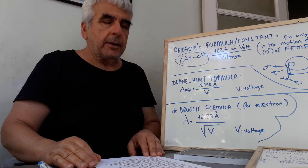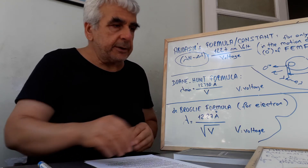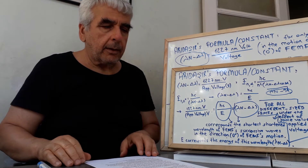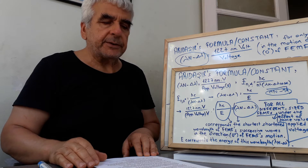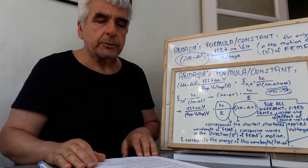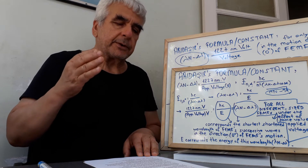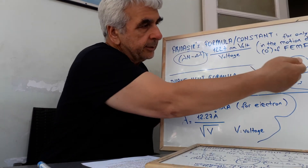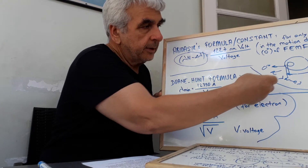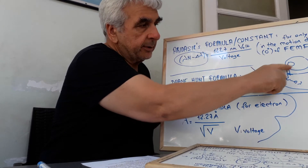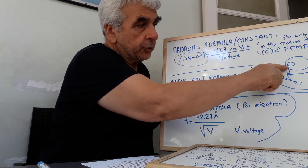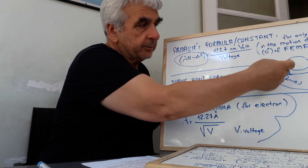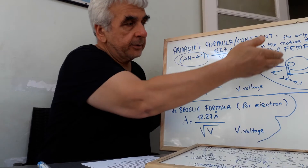According to my theory and my formulas — point 3 — Lambda-N minus Delta Lambda is inversely proportional to the free electron motion form's velocity, and its corresponding energy is directly proportional to the free electron motion form's velocity. This is the free electron motion form in the direction of motion, zero degrees — just in the direction of motion: shortest, shortened successive waves wavelength and corresponding energy. Highest energy, shortest wavelength.